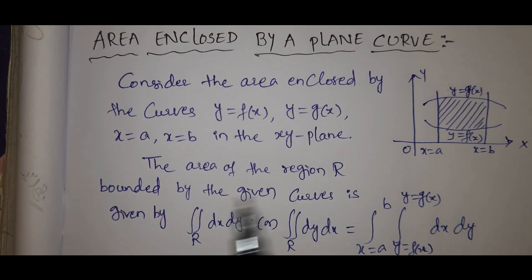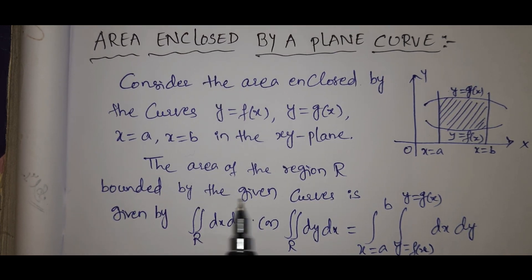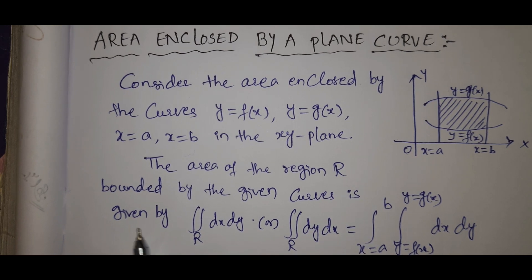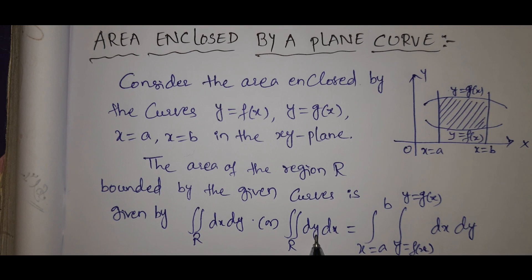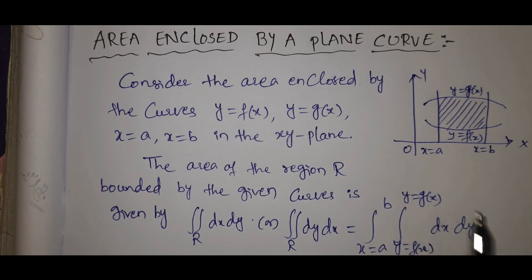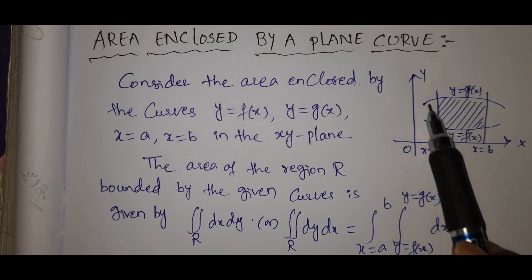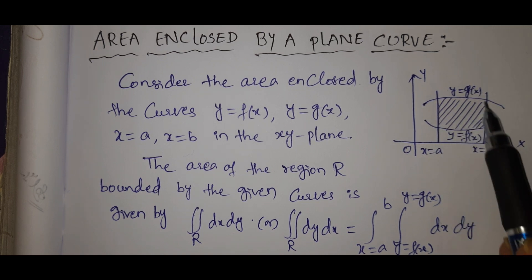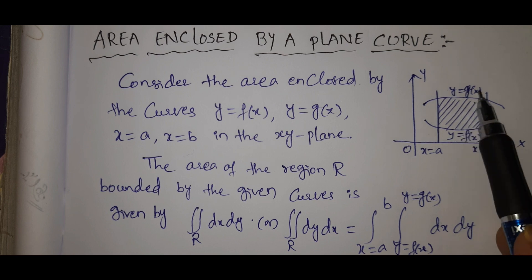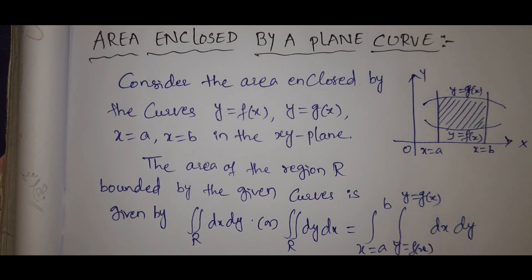The area of the region R bounded by the given curves is given by double integral dx dy or double integral dy dx equal to integral x = a to b, y = f(x) to g(x) dx dy. This is the particular area, that means region y = f(x) to y = g(x).